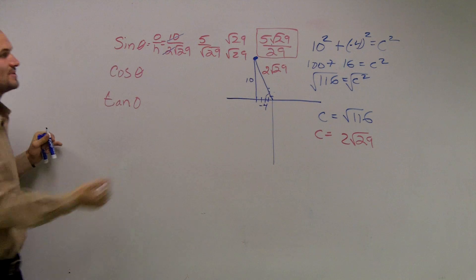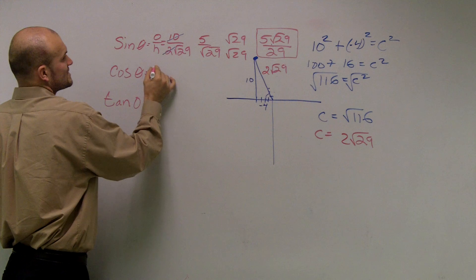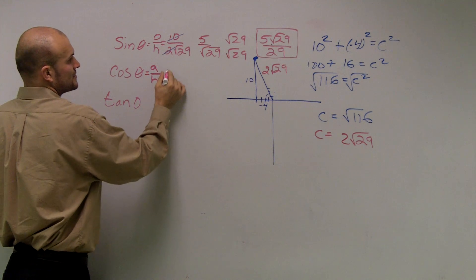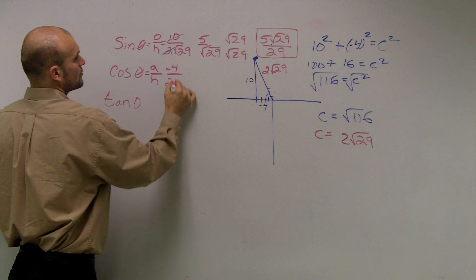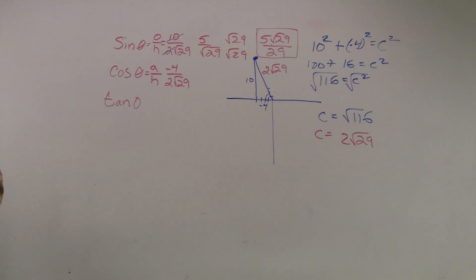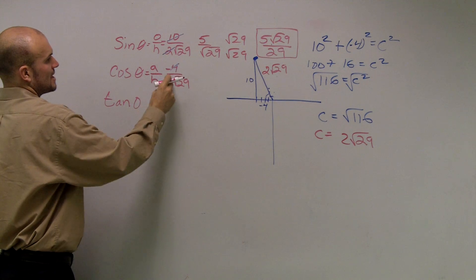Well, cosine of theta is going to be the exact same thing, because now it's cosine, remember, is adjacent over hypotenuse. So that's going to be a negative 4 over 2, radical 29. And I'll do this one a little bit quicker. You can cancel those out,